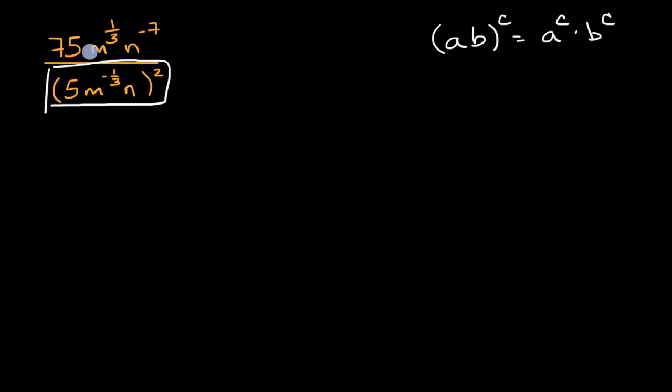And actually, let me just simplify this so I don't have to keep rewriting things. So this can be rewritten as 5 squared times m to the negative 1 3rd squared times n squared, which is the same thing as 25.